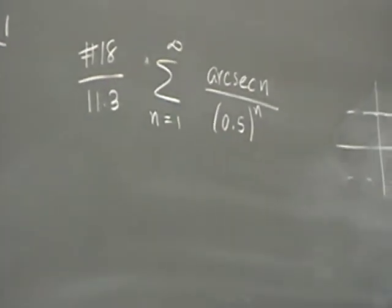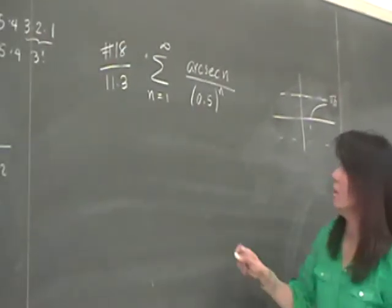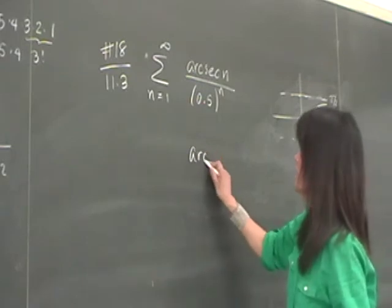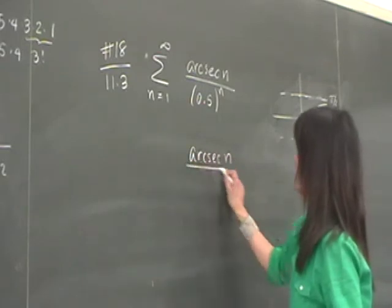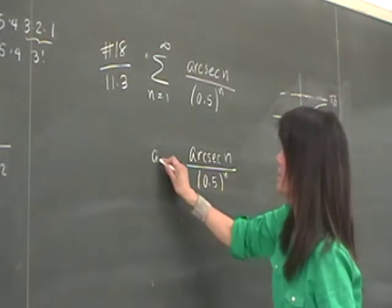So I guess what we can do is maybe we can look at the nth term to begin with. Let's look at arc secant n over 0.5 to the n. This is the a sub n.